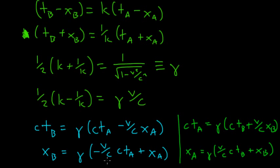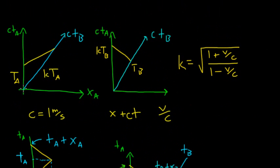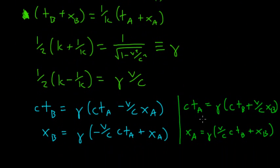If I see observer B moving away from me, if I see observer B moving in the positive X direction away from me, then B is going to see me moving in the negative direction. Same value for the velocity, same magnitude of the velocity, but the direction is going to be negative.